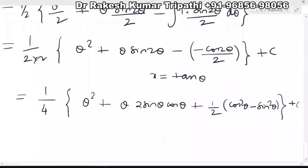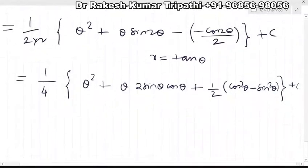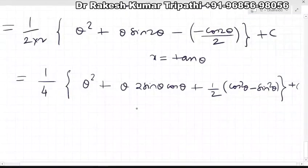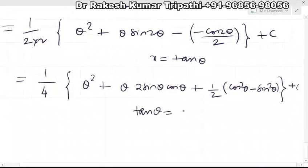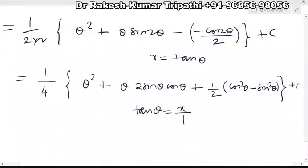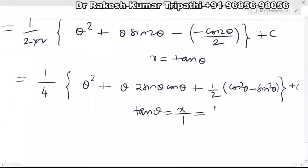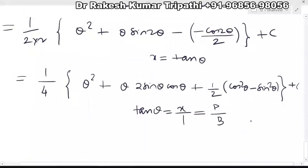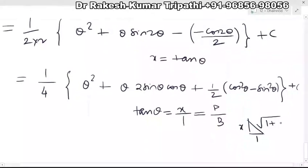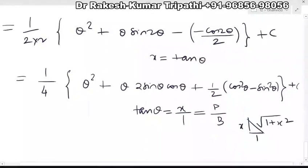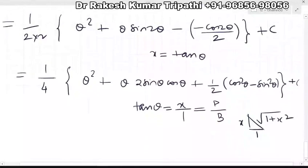Even if you know the formula cos 2θ = cos²θ − sin²θ, you can find the integral. Now since tan θ = x, we can write x as perpendicular upon base equal to x/1, which means perpendicular is x and base is 1. Therefore the hypotenuse will be √(1 + x²). Let us make a right triangle with these values.